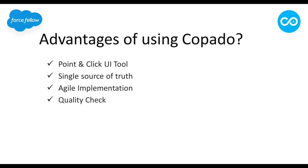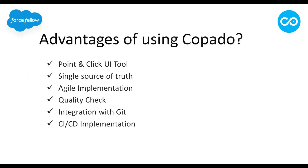Next we have quality checks — with Copado you can define custom quality checks to maintain code quality and prevent deployment errors. Next, we have integration with Git — every Salesforce org will be connected to Git, so you will have a better version control system. Next, we have CI/CD implementation — in Copado we can define continuous integration and continuous deployment pipelines.